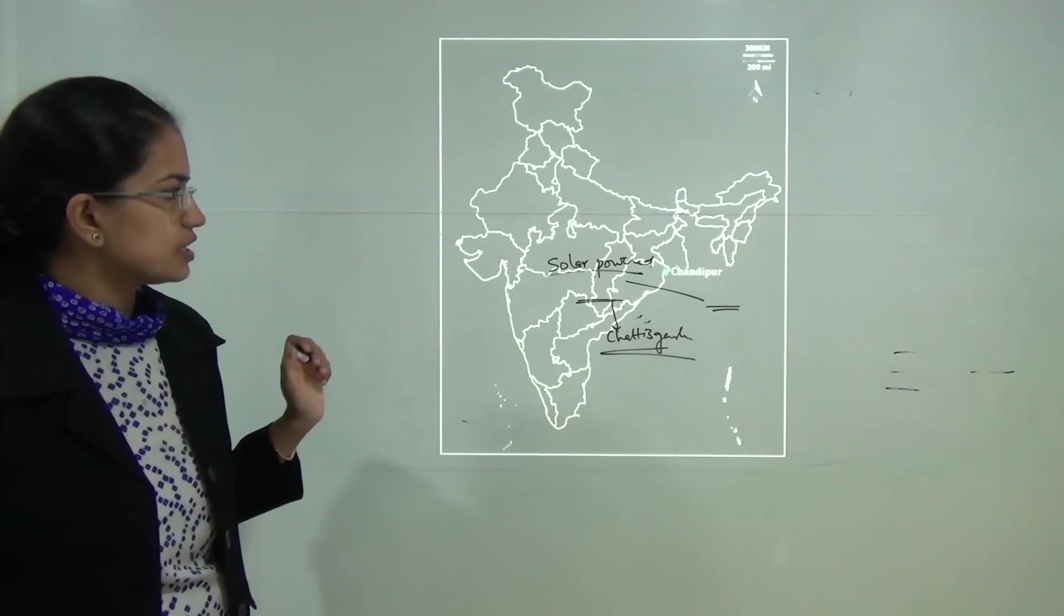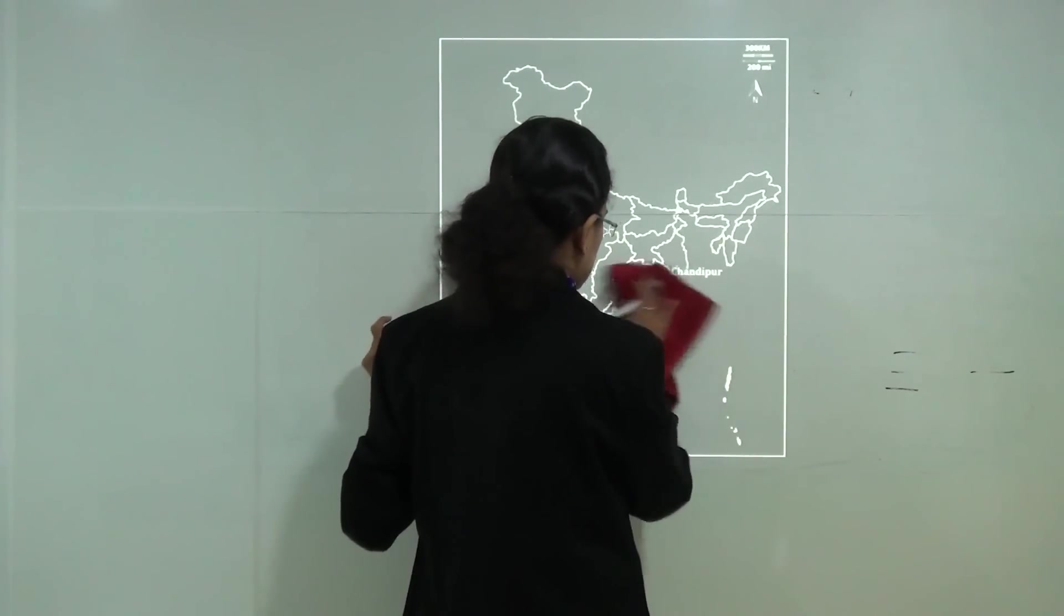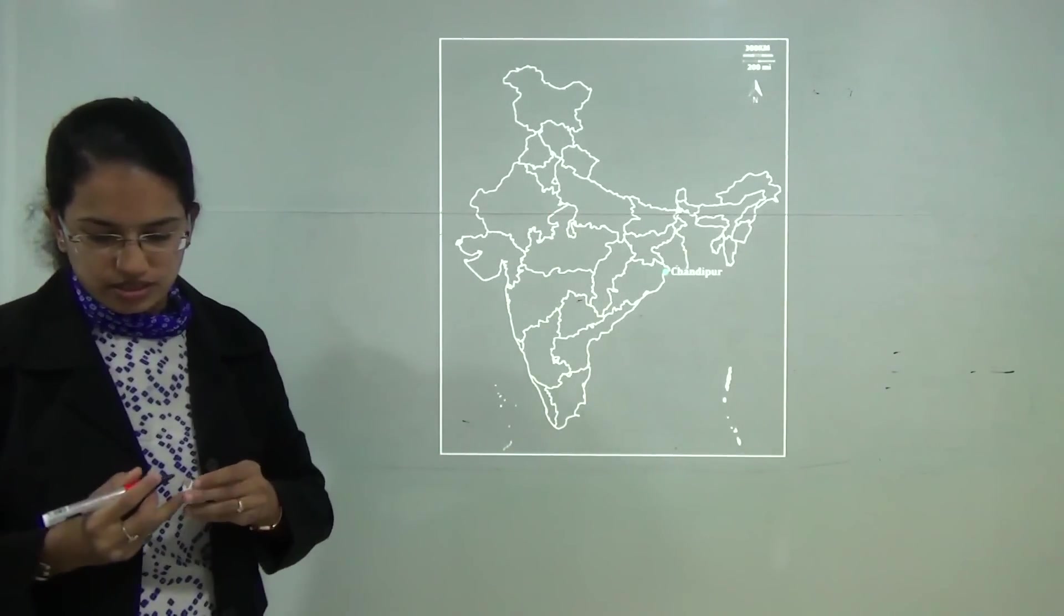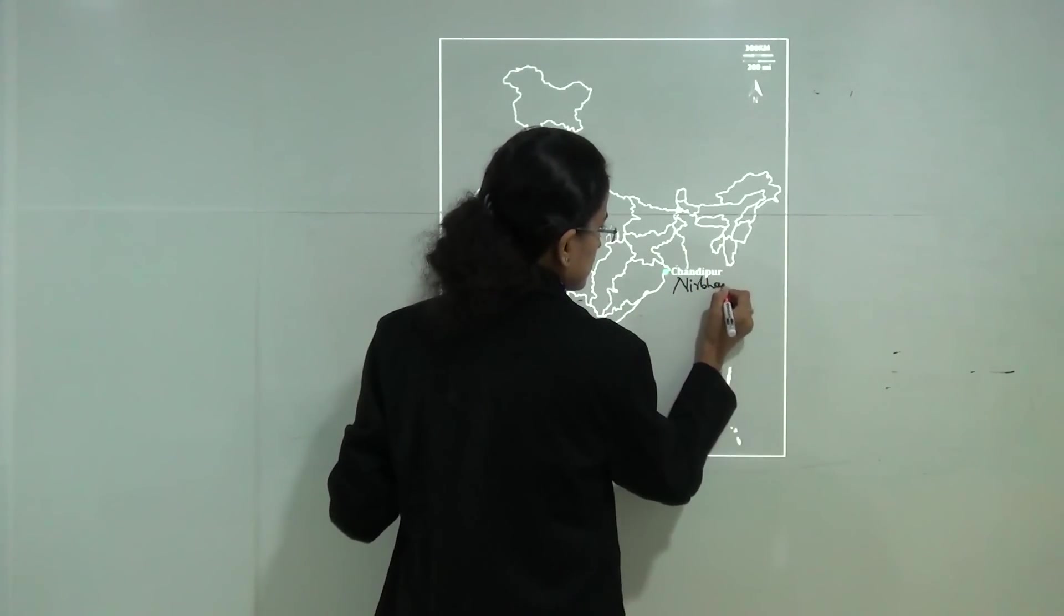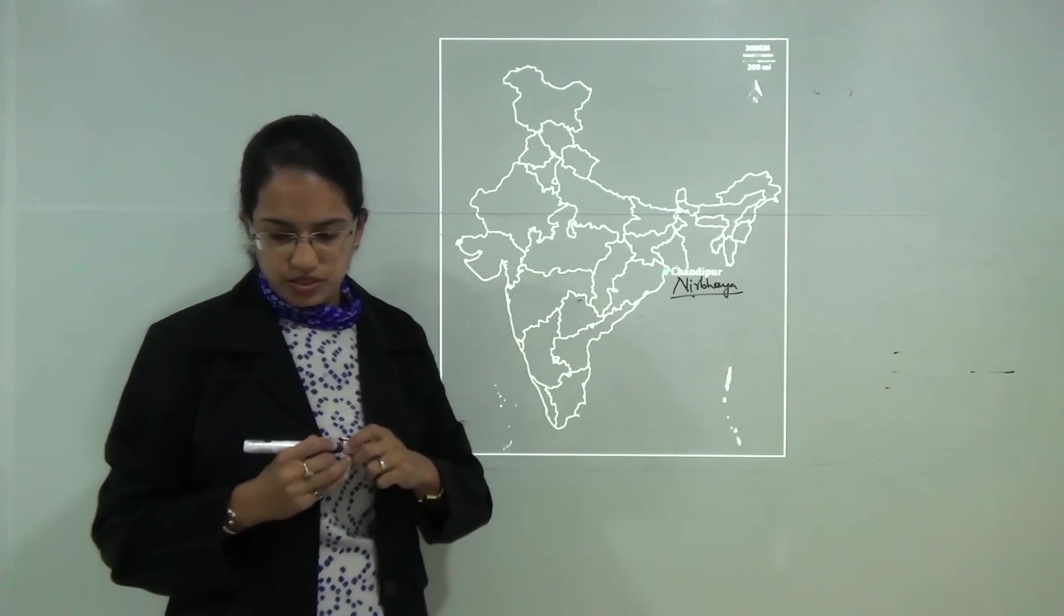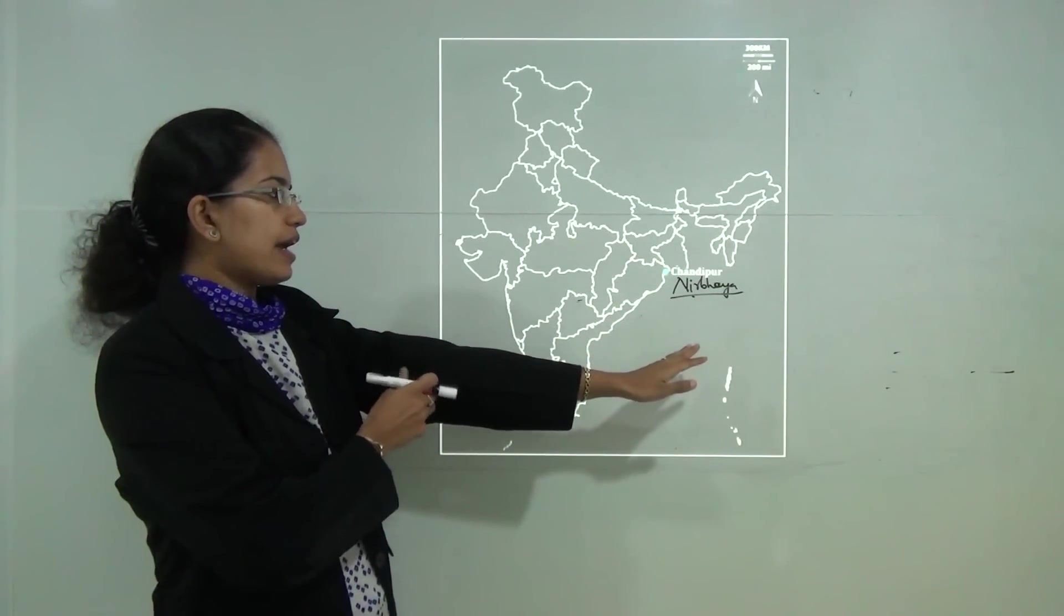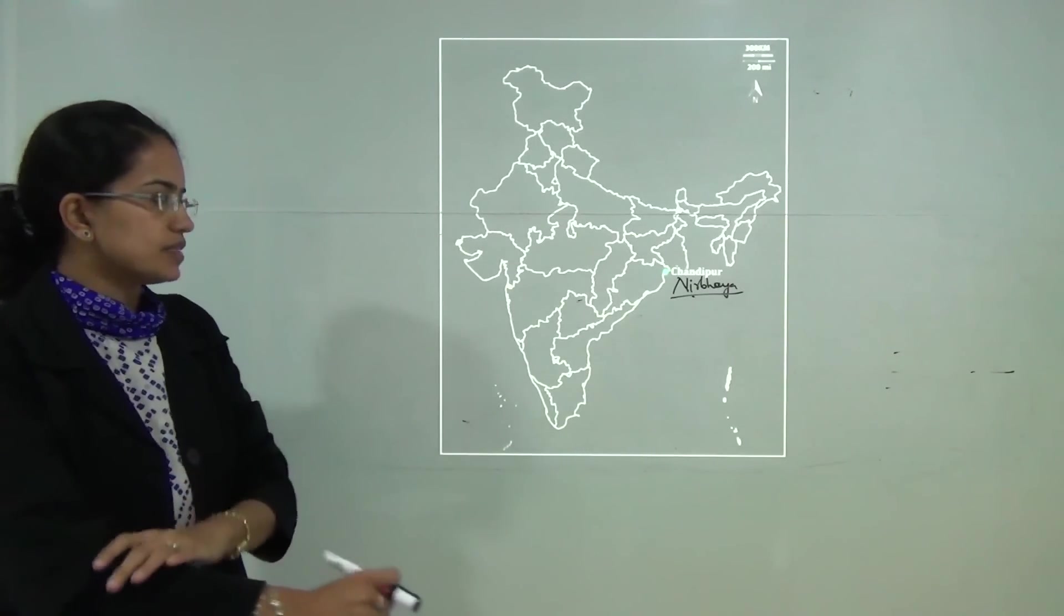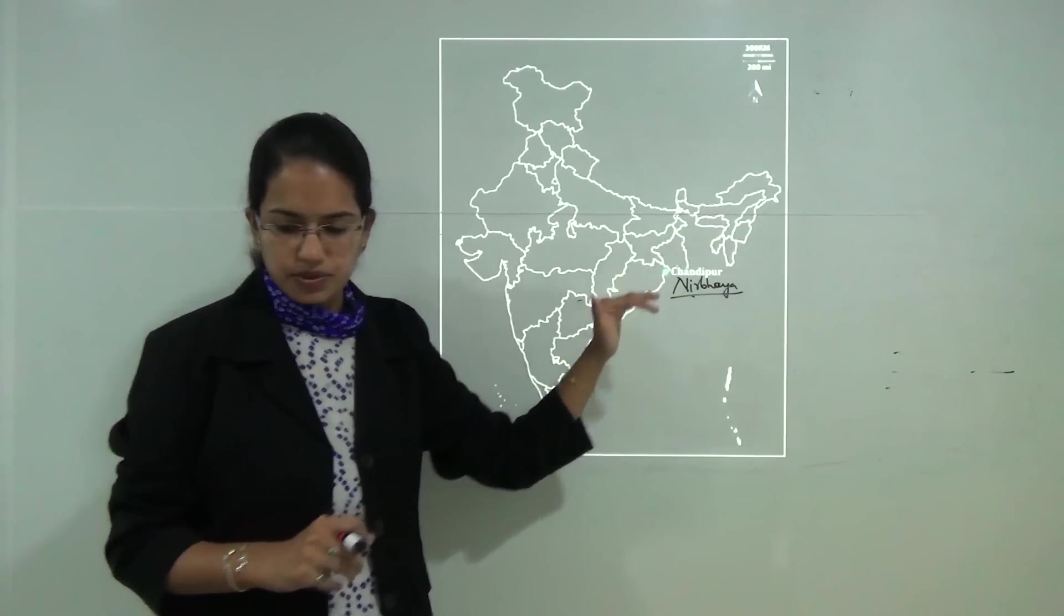The next location here is Chandipur. Chandipur is a missile testing center and recently there was the launch of the cruise missile from Chandipur. It was a kind of subsonic cruise missile that was launched and a similar format was launched by Pakistan which was named as Babur and America which was known as Tomahawk and India launched a similar missile that was the Nirbhay from the Chandipur range.